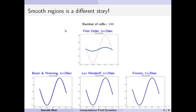In the case of a smooth solution — for example, a smooth sine wave which we initiate our domain with — we try to advect this sine wave and see how the solution behaves as time progresses. In the case of the first order method, the solution is totally diffused and almost unusable.